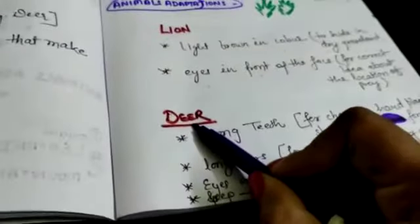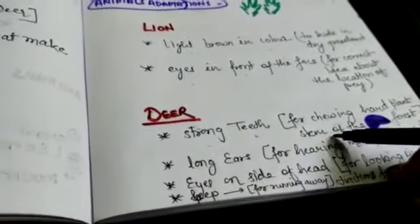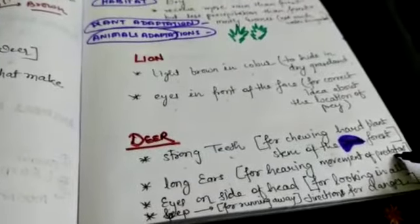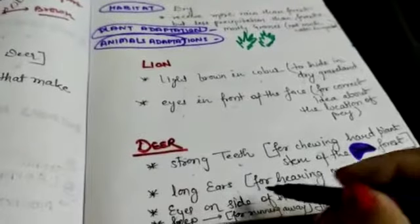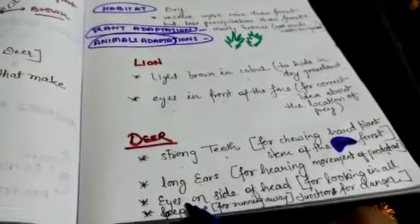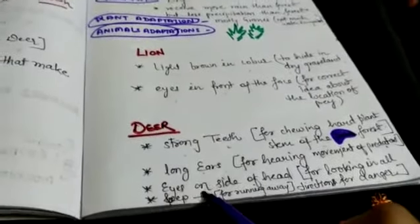Deer has strong teeth in order to chew hard stem of the plant. Then long ears for hearing movement of predators from far away. About eyes on the side of head for looking in all directions, and then speed is fast.